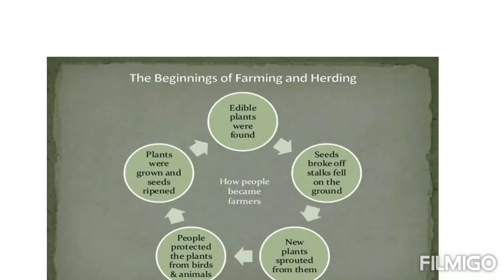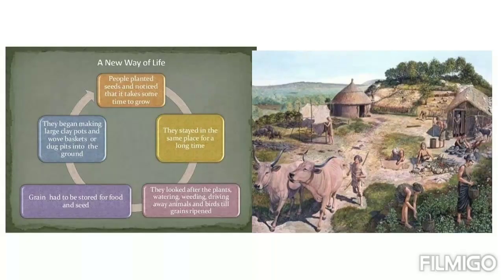Different plants are grown in different regions and time periods as per their natural conditions. Similarly, different animals also need different environments to live and grow. This is how early humans started settling themselves in different regions — a change from nomads to natives, or a new way of life.